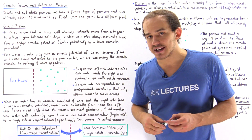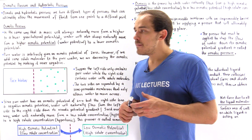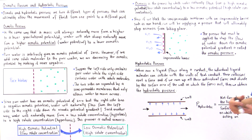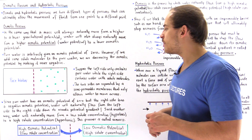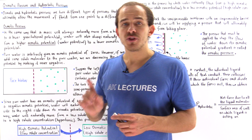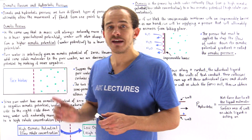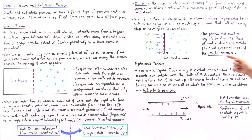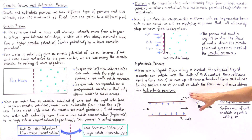Hydrostatic pressure is slightly easier to explain — it is simply fluid pressure. Whenever a liquid travels through a conduit or pipe, the individual liquid molecules collide with the walls. Each molecule exerts a force on the wall, and if we sum all those individual forces and divide by the surface area of the wall, we obtain the fluid pressure, also known as hydrostatic pressure.